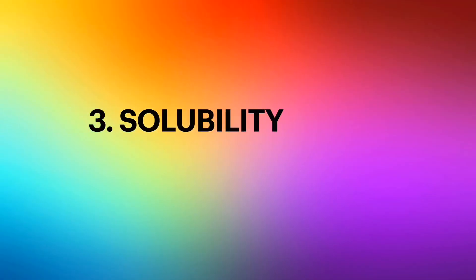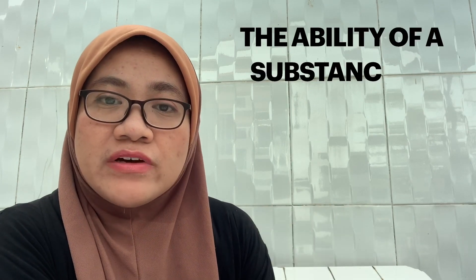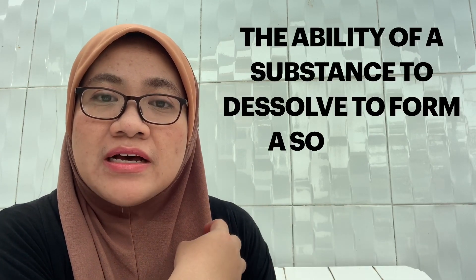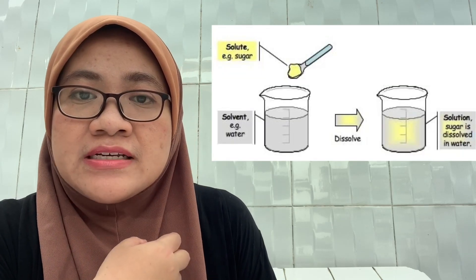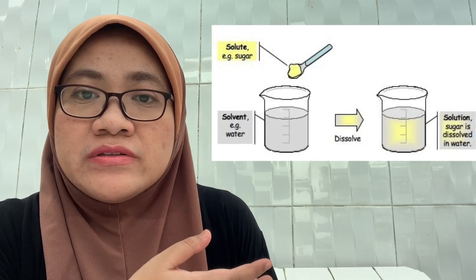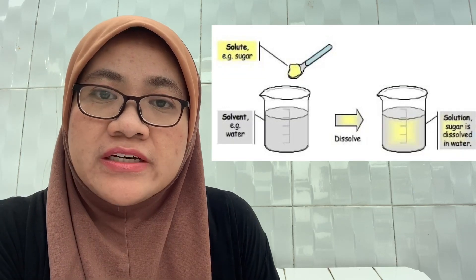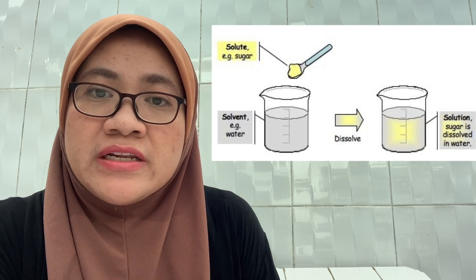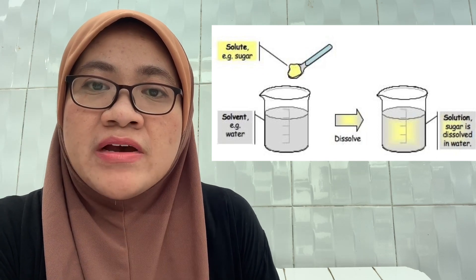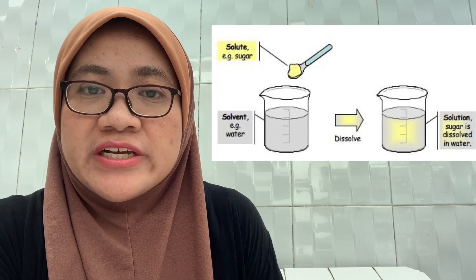Now let's talk about solubility. Solubility is the ability of a substance to dissolve in a solvent to form a solution. For example, sugar as a solute dissolves in water as a solvent, and when you stir them, it forms a syrup solution.